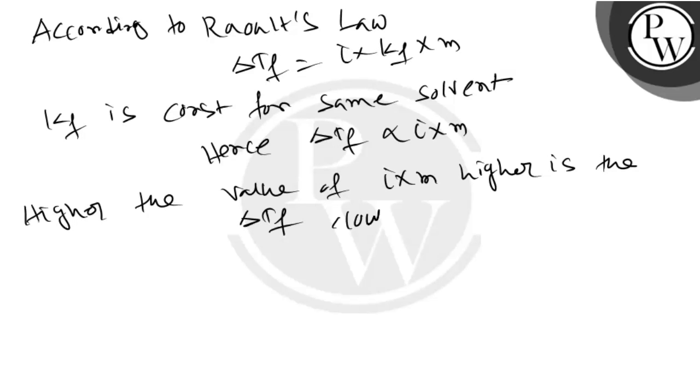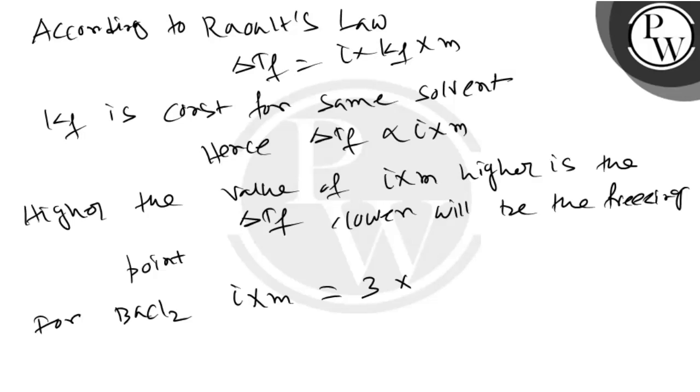Higher the value of i into m, higher is the ΔTf, lower will be the freezing point. For BaCl₂, i into m is equal to 3 into 0.2, that is 0.6. For KCl, i into m is equal to 2 into 0.2, because KCl dissociates as K⁺ and Cl⁻, so that will be 0.4.